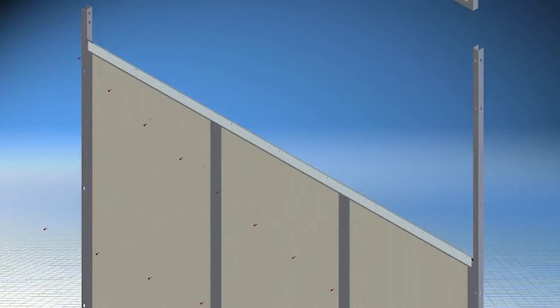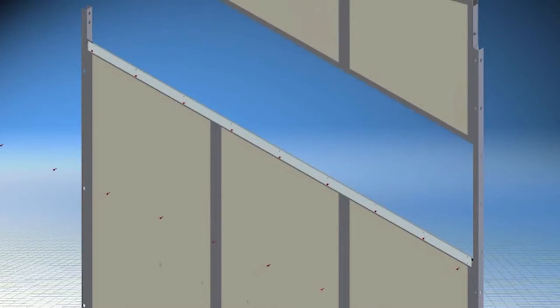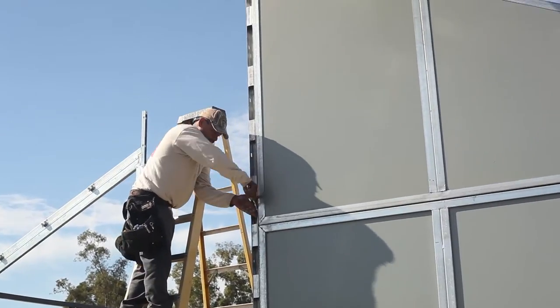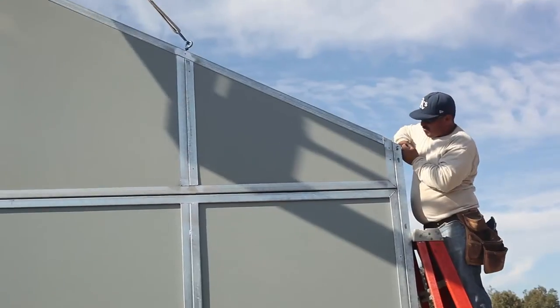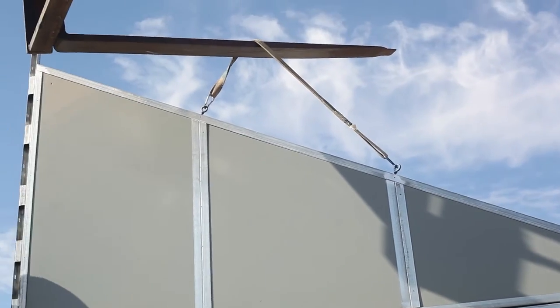Install side gables by lifting them into place with the forklift, lowering them onto the T-strap and bolting them to the connector columns on both ends. Use 1 inch number 14 tech screws to the top of the strap and into the gable. Install both side gables before installing the center gable.